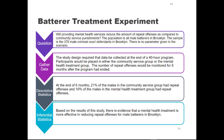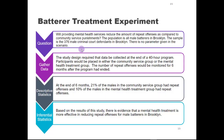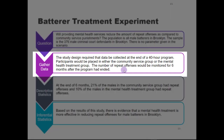In the question phase, the question is: will providing mental health services reduce the amount of repeat offenses as compared to community service punishment? The population is all male batterers in Brooklyn. The sample is the 376 male criminal court defendants in Brooklyn, and no parameter was given in the scenario — this is often the case, you just have to check to see if it's there. In the gathering data phase, the study design required that data be collected at the end of a 40-hour program. Participants were placed in either the community service group — the control group — or a mental health treatment group, and after six months they would look to see how many of those men had repeat offenses.